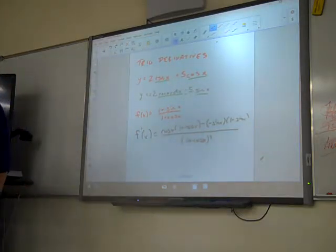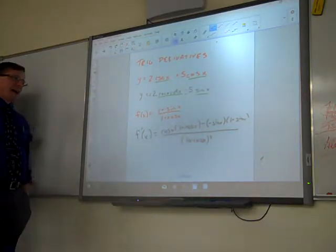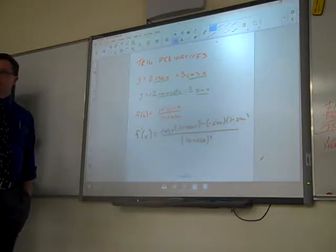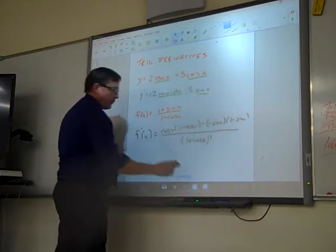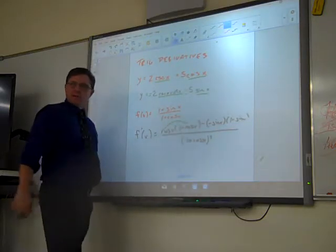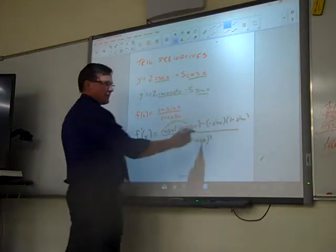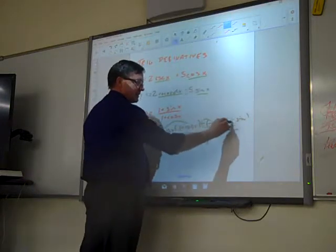So when I look at this, this is probably not one I'd make you expand. I can tell right now it's not going to work out very pretty. Hopefully you guys can see cosine squared. The question is, do you get a plus sine squared? But you don't because it's three negatives on here.